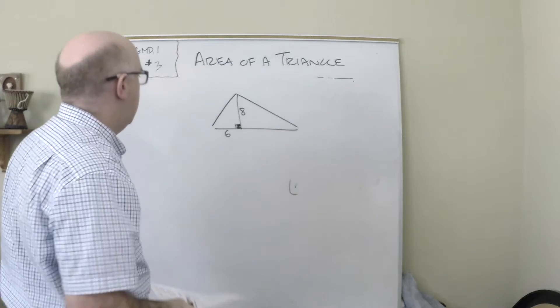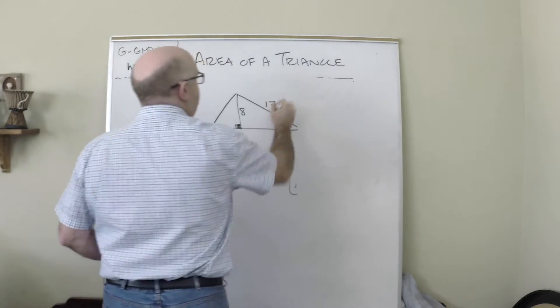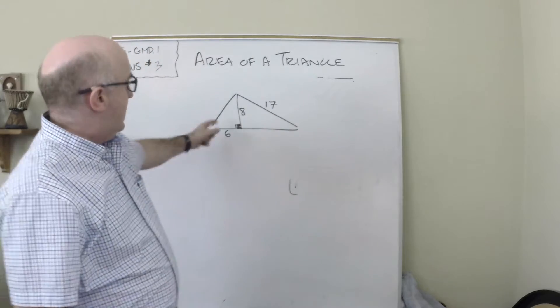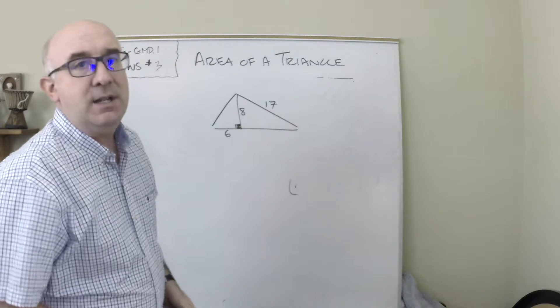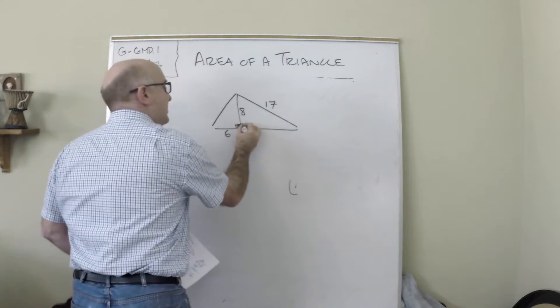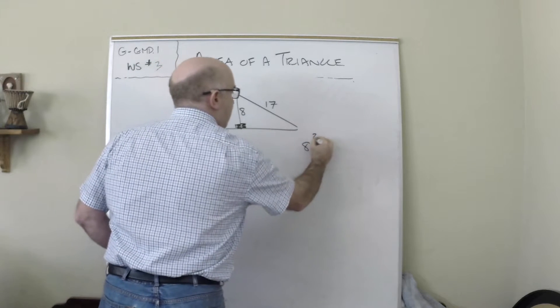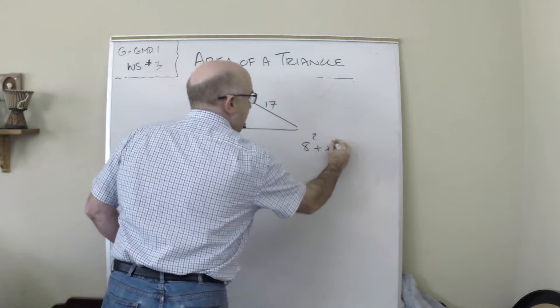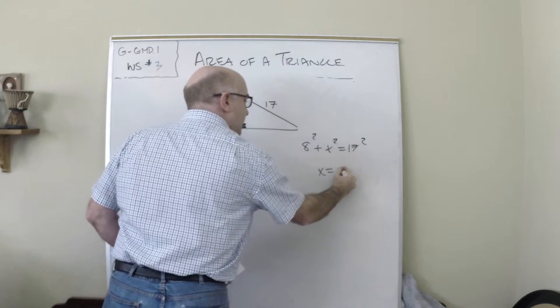...is a triangle where maybe they give you this is 6 and 8, and this is a right triangle, and you might have something like this. And so you're like, 'Okay, I have a height of 8, but I don't have my base.' And so what you might need to do is use the Pythagorean theorem to find this distance.